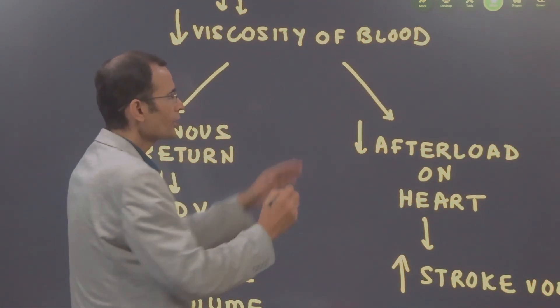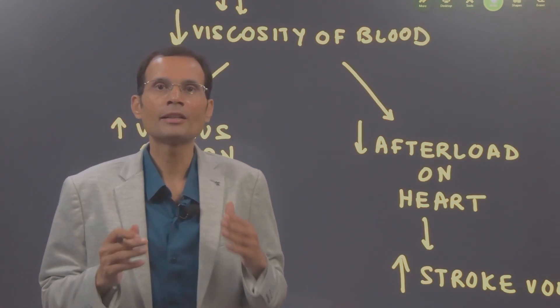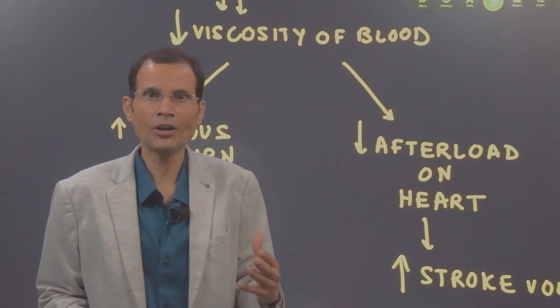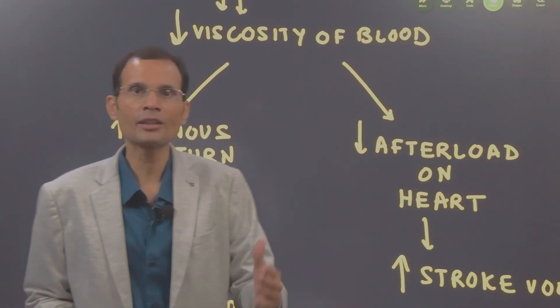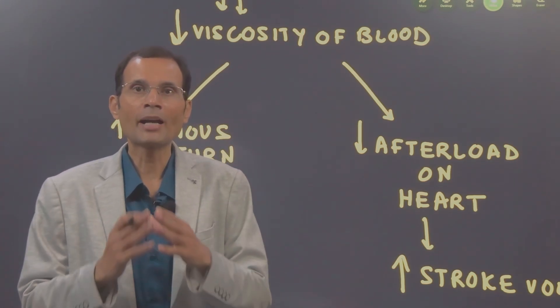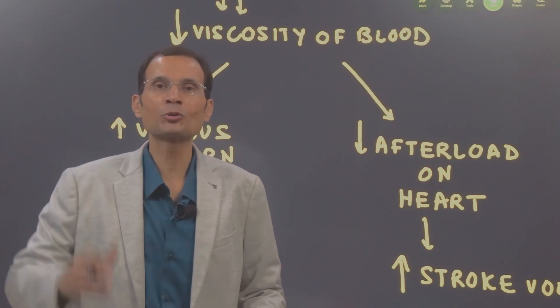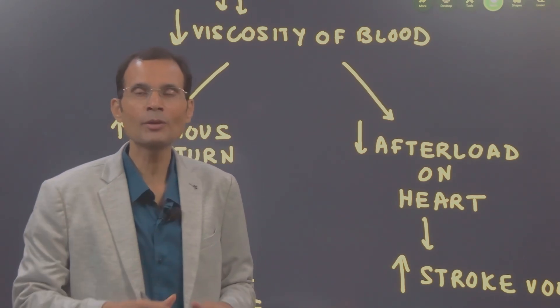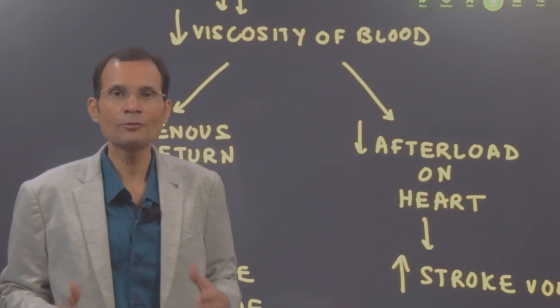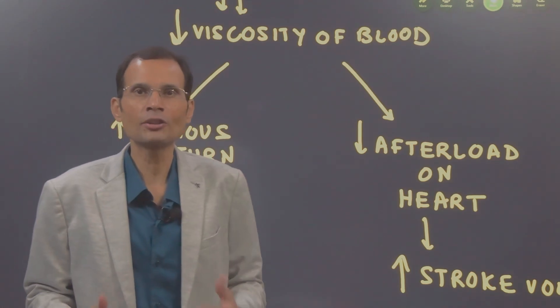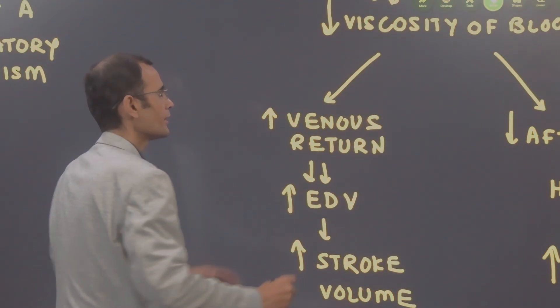What happens here is because of the reduced viscosity, the afterload on the left ventricle decreases. That viscous drag or viscous resistance will be less and therefore, afterload on the left ventricle will be less and you have to know this. Reduced afterload will increase the stroke volume. Yes, repeat this once again. Less the afterload, greater is the stroke volume because it becomes easy for the left ventricle to pump out the blood into the aorta with less of the viscous resistance.